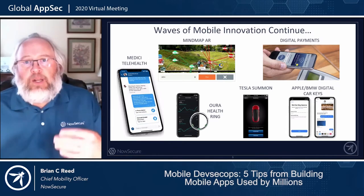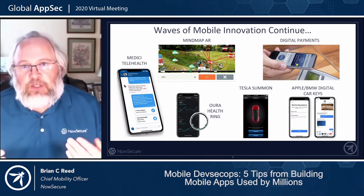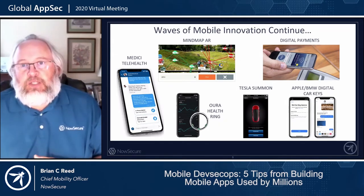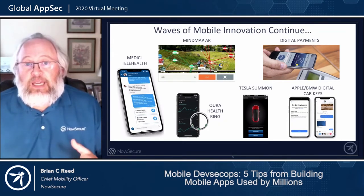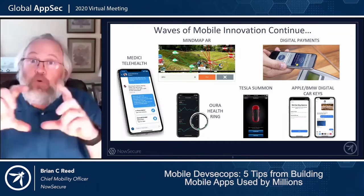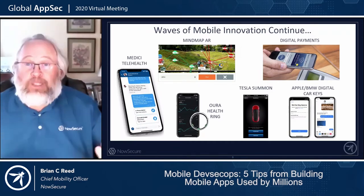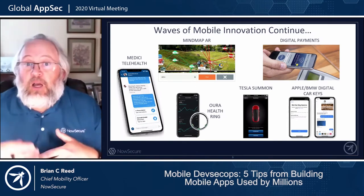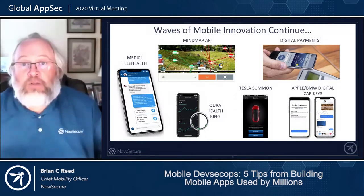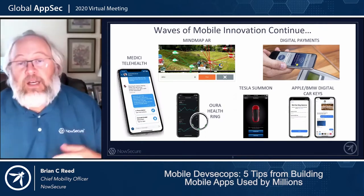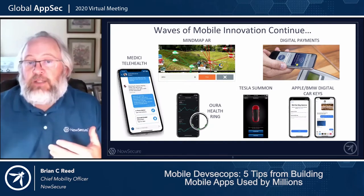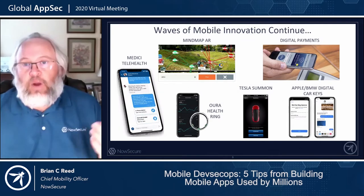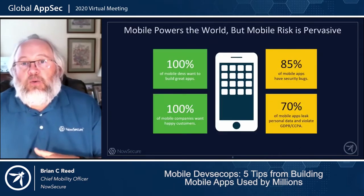When we think about innovation, waves and waves of mobile innovation continue. Today you can use the MindMap AR application to draw mind maps over augmented reality photos. We have digital payments, digital car keys — I have a Tesla and can summon my car. The NBA has partnered with Aura to work on a health testing app for athletes in COVID situations. There are all these great innovations in the market.